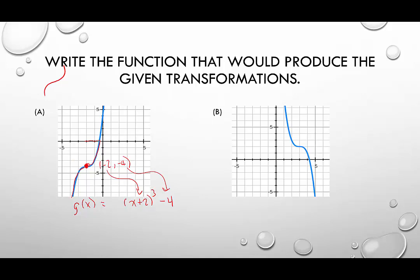Now there's one more thing we need to make sure of. We need to make sure that there's no stretch or shrink. And one way we can do that is we can identify any other point on the graph other than the point of inflection. So this one is 0, 4. Let's use that one.